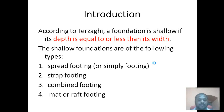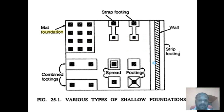In shallow foundations there are various types we discussed. The first one is simple footing, the second is trap footing, the third is combined, and the fourth is mat foundation. This figure shows all the types of shallow foundations.